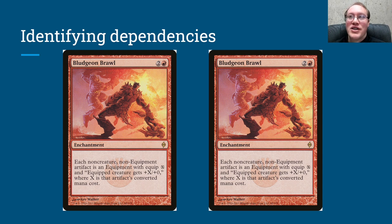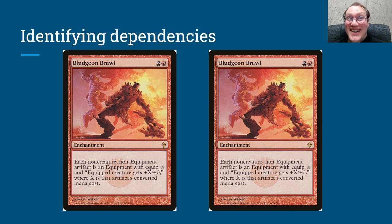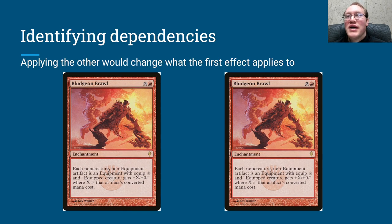Because of that, we could say that each of these Bludgeon Brawls is actually dependent on the other one — applying this one first changes what objects that one would apply to, and vice versa. So we go based on timestamps. It's kind of a funny junk example because everybody already knows that two Bludgeon Brawls in play is the same as one Bludgeon Brawl. But not a lot of people think about this interesting aspect: only one is actually applying to any permanents. Not a lot of people would even think there was a dependency at all — but yeah, there's a dependency loop. Kind of cool.